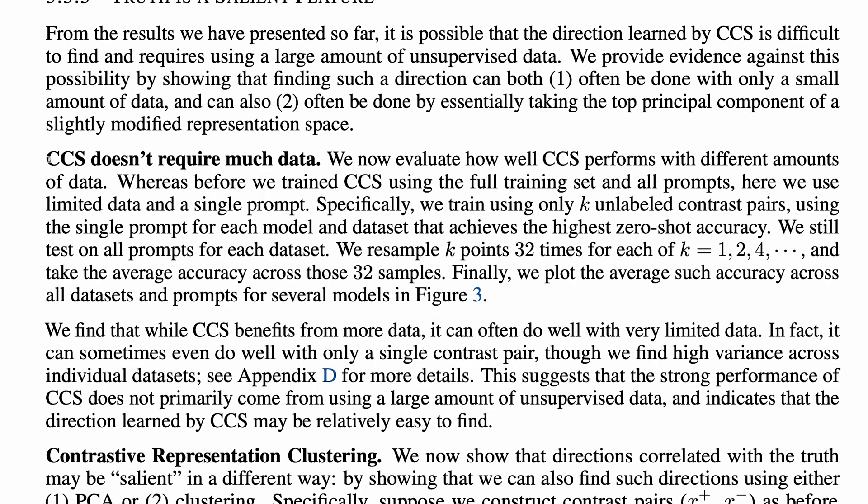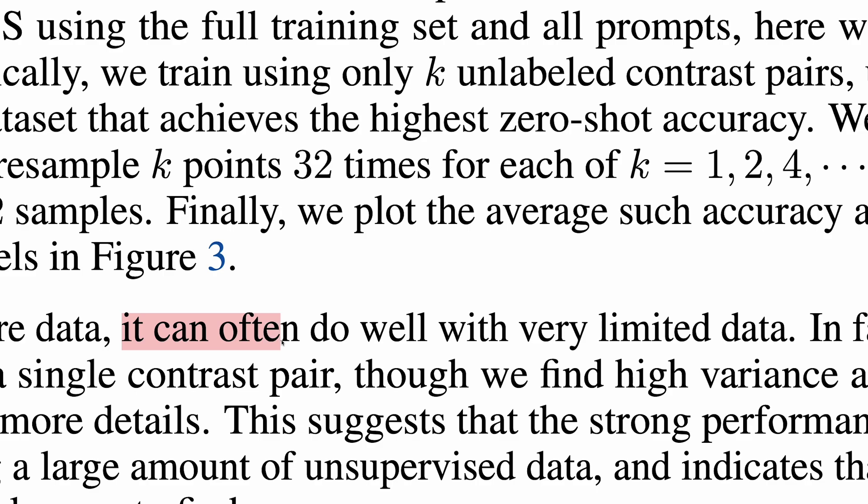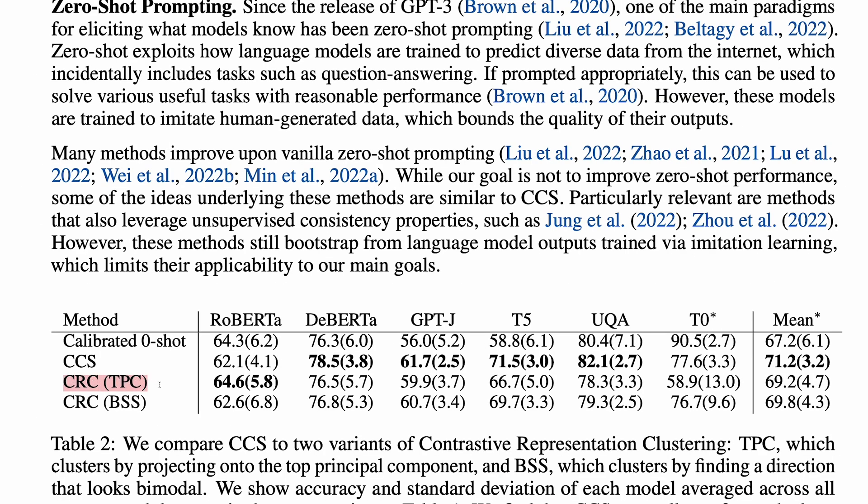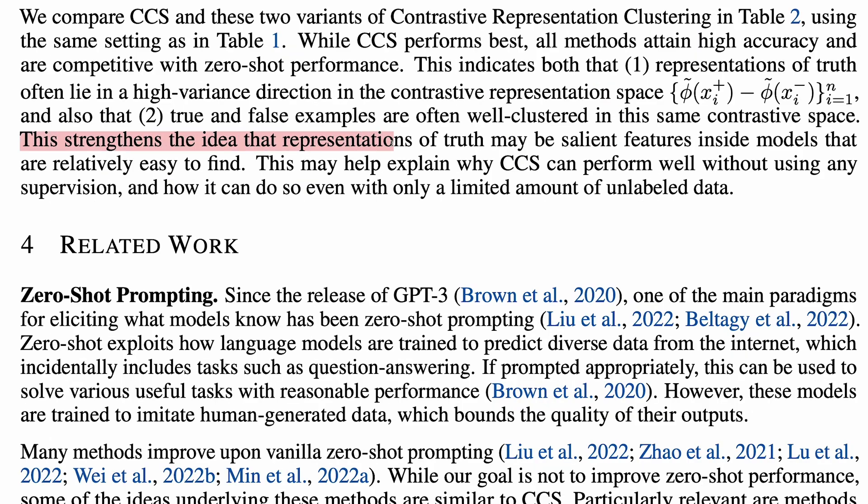Truth is a salient feature. In practice, CCS doesn't require much data. In fact, it can often do well with very limited data. It is also found that simply taking the top principle component of the differences in normalized hidden states across contrast pair embeddings also works fairly well. That gives this throw CRCTPC, which is slightly weaker than CCS, but still outperforms the calibrated zero-shot baseline. This strengthens the idea that representations of truth may be salient features inside models that are relatively easy to find.